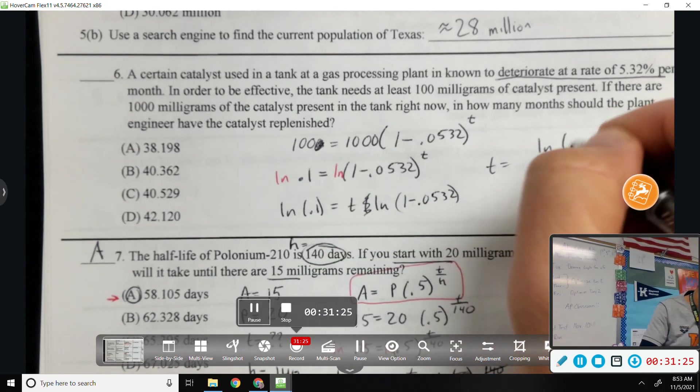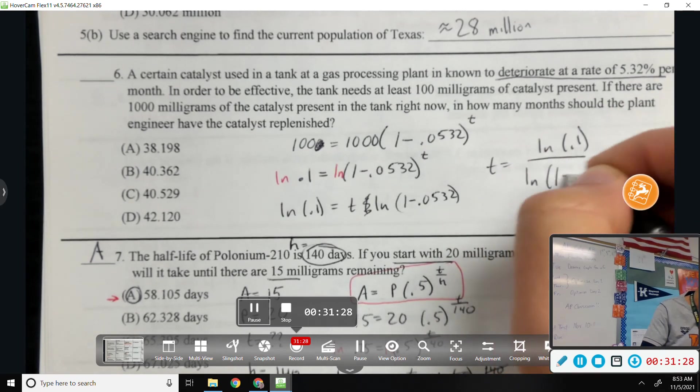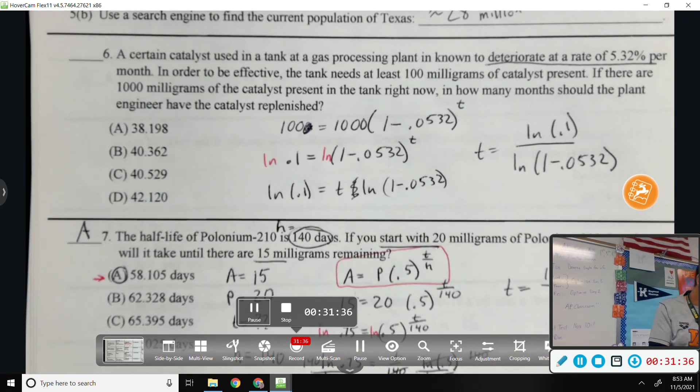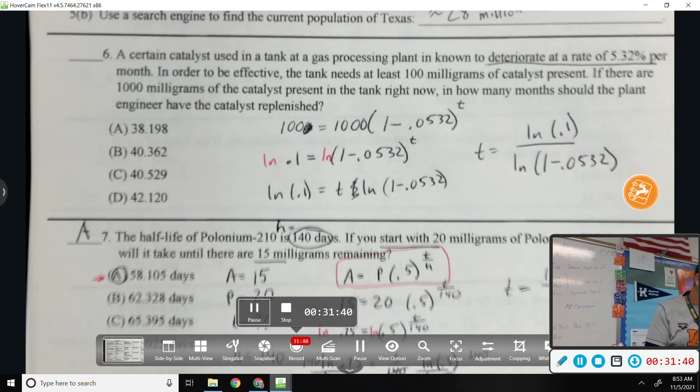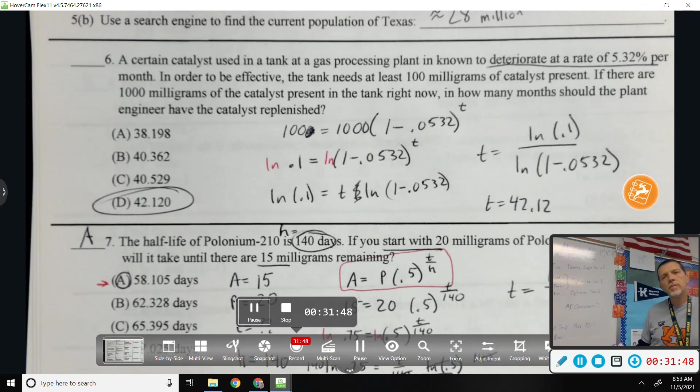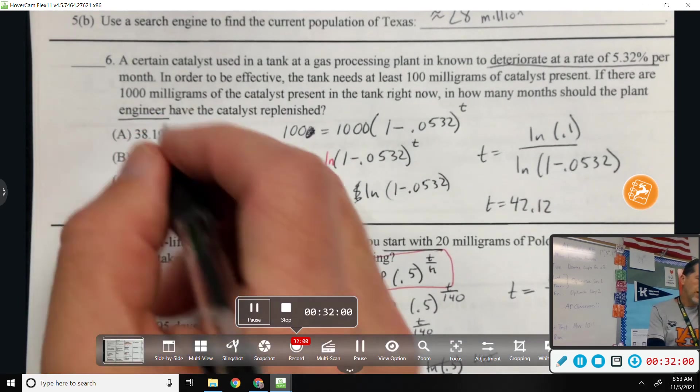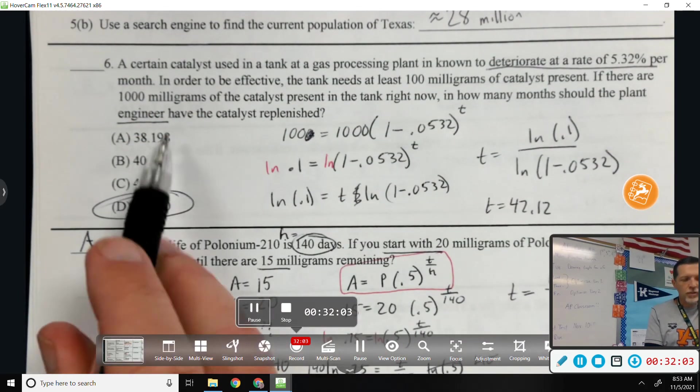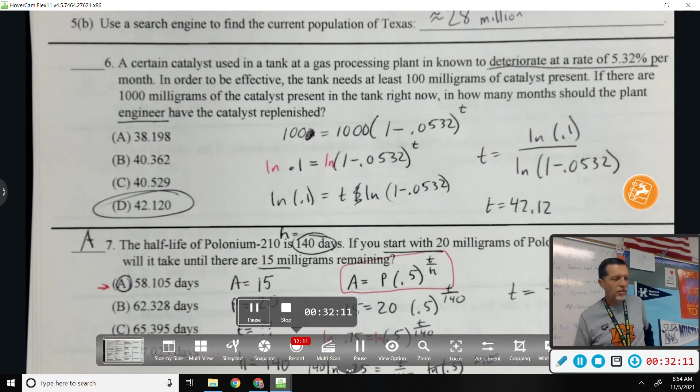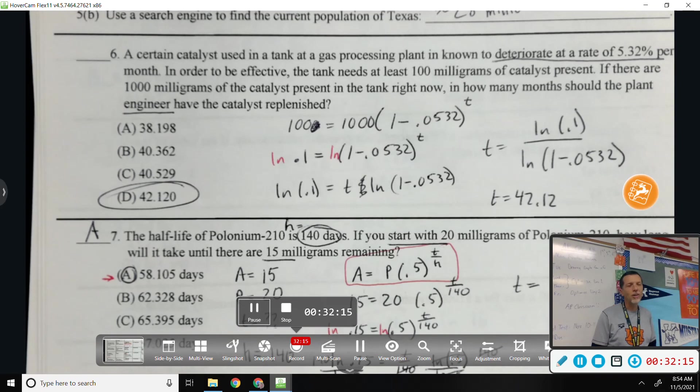So, natural log of 0.1 divided by natural log of 1 minus 0.0532. So, in 42 months, we need to replenish the catalyst. Now, presumably this guy's not going to wait until exactly 42 months. That gives him an idea. And so, after 36 months, maybe he goes and checks to make sure his calculations are on track. Maybe he checks it monthly anyway. But, this gives him an idea of how often he'll have to replace the whatever chemical is in there. Okay.